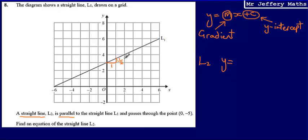Across by 1, up by a half. Across by 1, up by a half. Across by 1, up by a half, and so on. So the gradient for line L1 is a half, and because they are parallel, that means the gradient for line L2 is going to be a half as well.